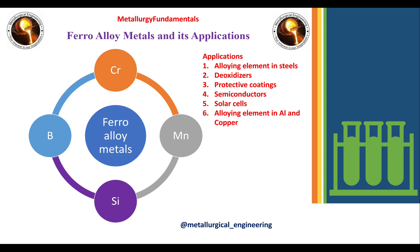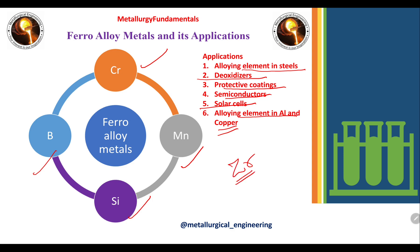Next are ferro alloy metals and their applications. The most common ferro alloy metals are chromium, boron, silicon, and manganese. Applications include use as alloying elements in steels, deoxidizers, protective coatings, semiconductors, solar cells, and alloying elements in aluminum and copper. One more important metal, zirconium, is used as an alloying element, for cladding purposes, and in nuclear applications.